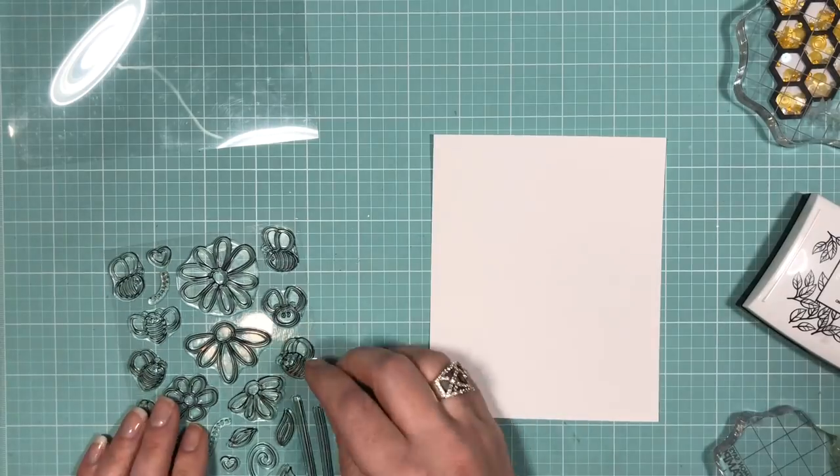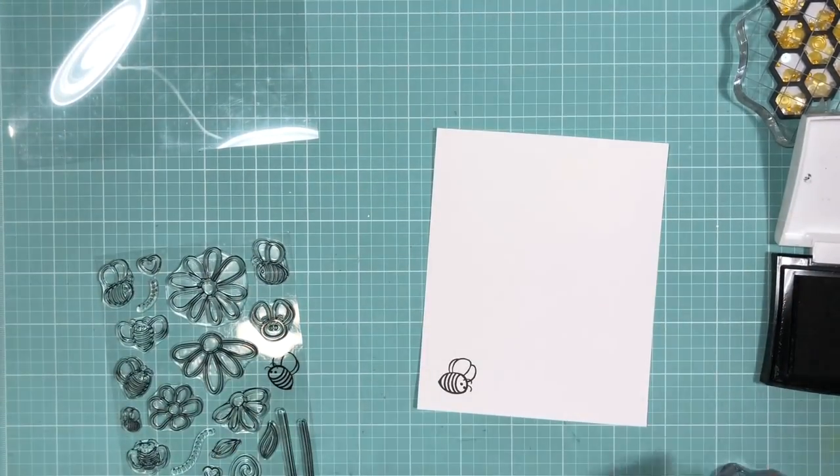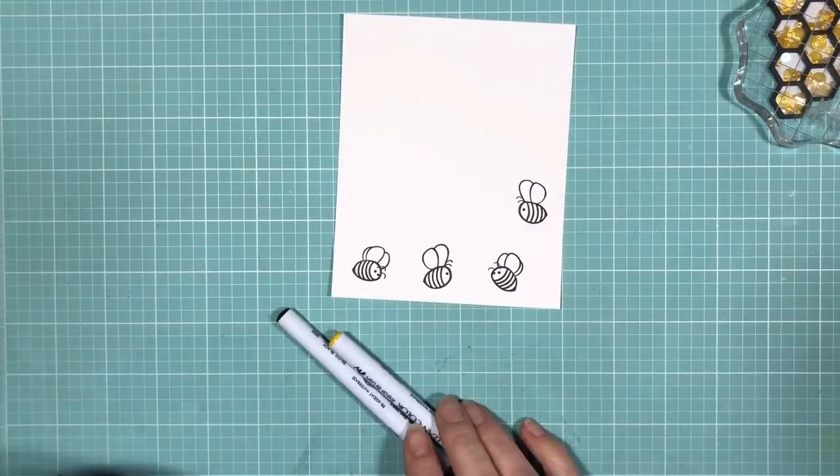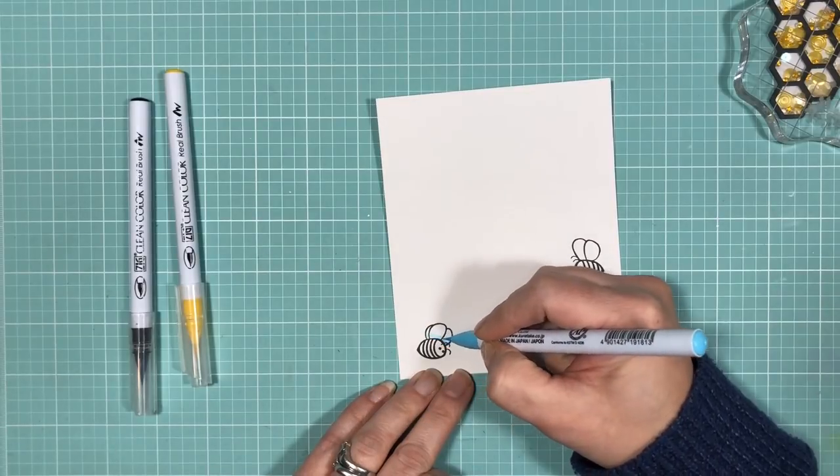Since I'm going to be coloring with some Zig Clean Color Real Brush pens, I'm using some Strathmore bristle paper and I'm stamping out my images with some Versafine Black Onyx ink.